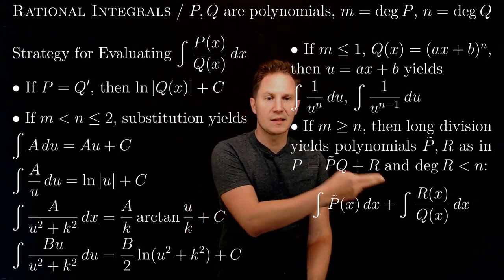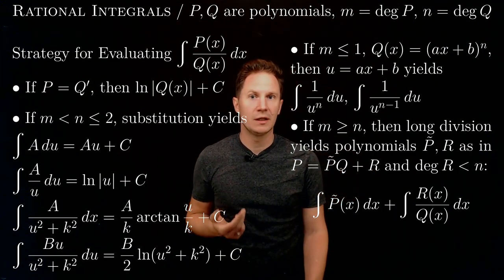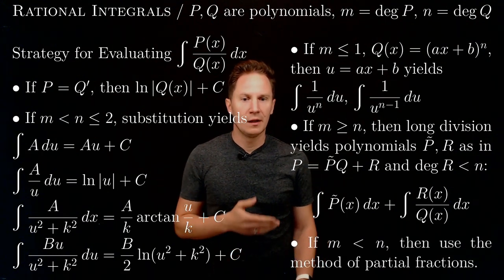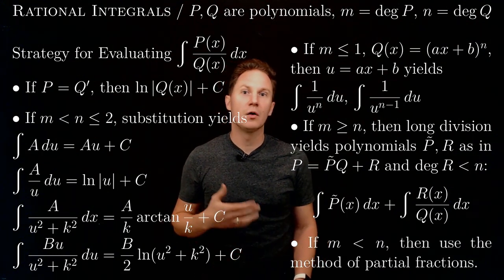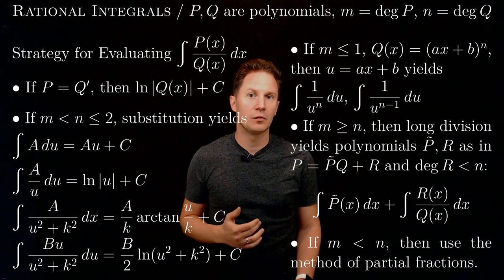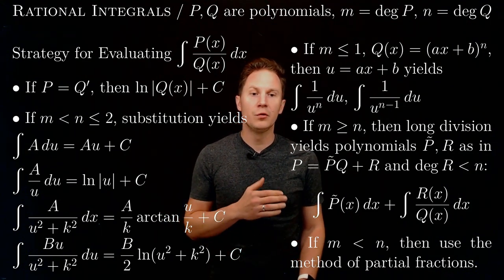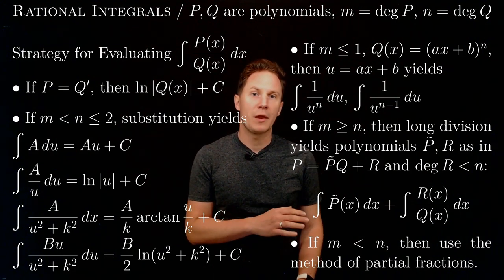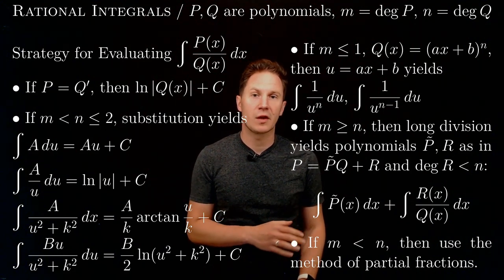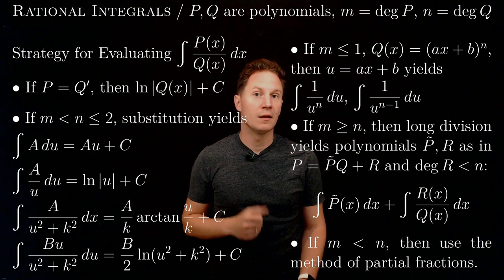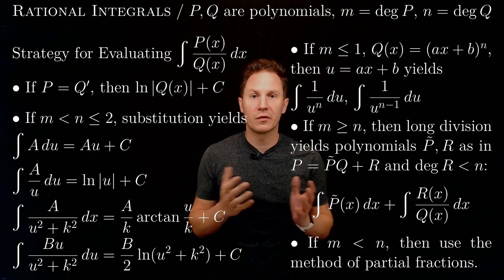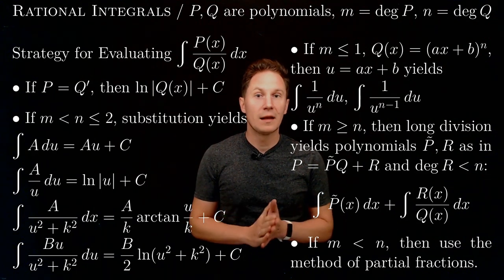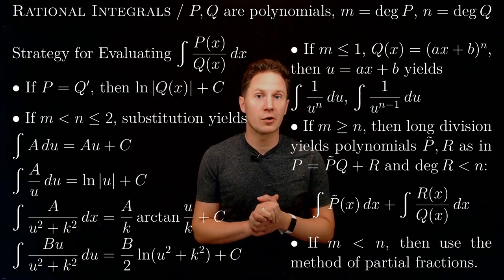And so for this last remaining rational integral we are in this case where the degree of the numerator is less than the degree of the denominator and then we use a method called the method of partial fractions and this is what we'll see in a follow-up video. So this is the strategy in general. Let's solve some rational integrals.